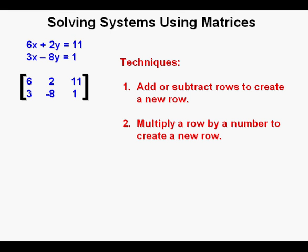The first thing we'll do is multiply this bottom row by 2. I will have the operations being performed and the results in red to show what's being done. And that becomes the new row, 6, negative 16, and 2. For our next step, we'll take this top row of 6, 2, and 11, and subtract the newly created row of 6, negative 16, and 2. 6 minus 6 is 0.